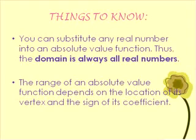There's lots of important information you should have gleaned from the lesson. You can substitute any real number into an absolute value function, so the domain is always all real numbers. The domain of a function are the values for x that you can put into the equation, and for an absolute value function the domain is always real numbers. The range of an absolute value function depends on the location of its vertex and the sign of its coefficients.